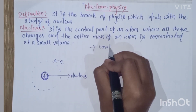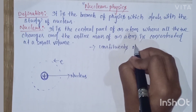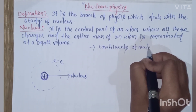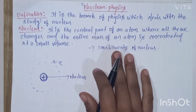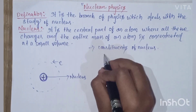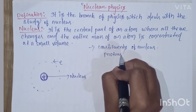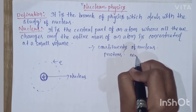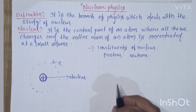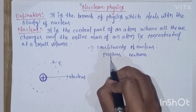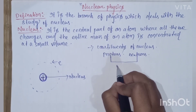The constituents of the nucleus — the nucleus is made up of protons and neutrons. Protons and neutrons together form the nucleus, and they are collectively called nucleons.